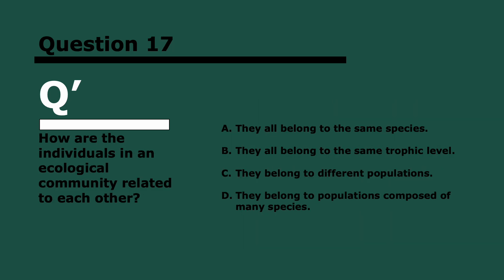Question 17. How are the individuals in an ecological community related to each other? Three, two, and one. They belong to different populations. That's the definition of a community, it's a collection of different populations. The rest are just not true factually. They don't necessarily belong to the same species or to the same trophic level, and populations composed of many species can happen but it's not necessarily true.